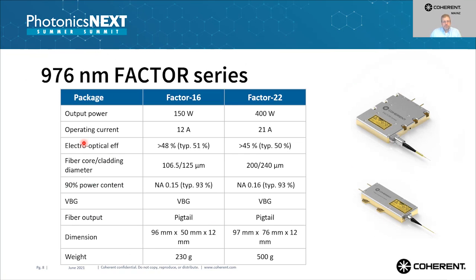Comparing the two: 100 micron stripes in the Factor 16, 200 micron single emitters in the Factor 22. The weight is 230 grams for the Factor 16 and 500 grams for the Factor 22. These weights are based on our standard industrial housing. If needed, different materials can reduce the weight further. Importantly, both achieve high power with typically 50 percent power conversion efficiency.